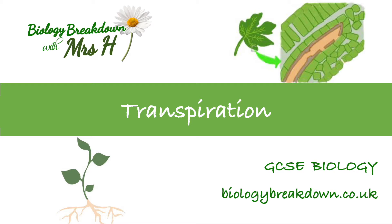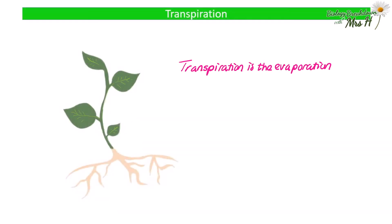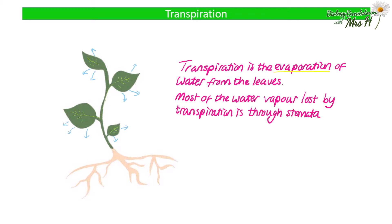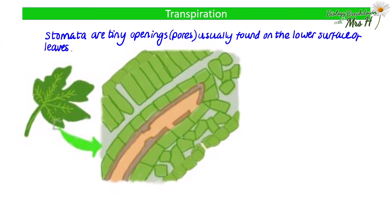Hello, Mrs. H here. Transpiration is the evaporation of water vapor from the leaves. Most of the water vapor lost by transpiration is through stomata, which are tiny openings or pores usually found on the lower surface of leaves.